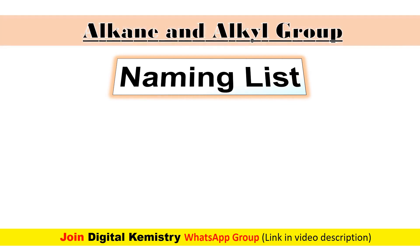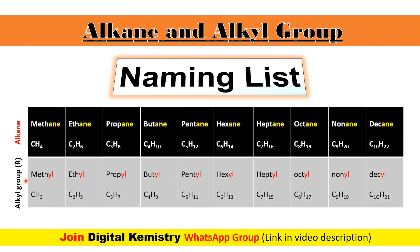Screen par humare paas alkane aur alkyl group ki naming list maujud hai. Is table ke zariye hum janenge ki kis tarah se hum easily alkane ko alkyl group mein convert kar sakte hain. Methane jise CH4 se represent kiya jata hai — yahaan ek hydrogen ko remove kiya, aur iske result mein CH3, yani methyl group ki formation ho rahi hai.